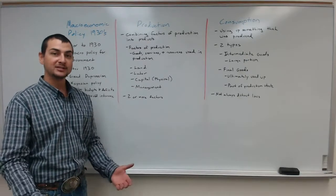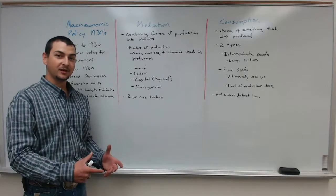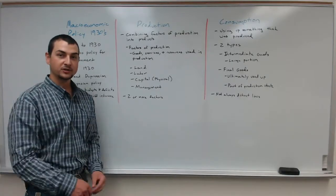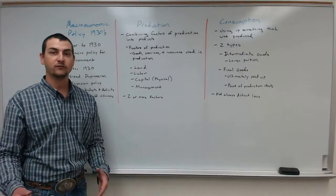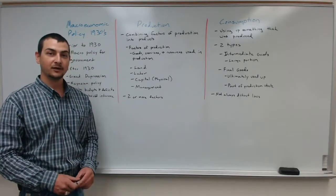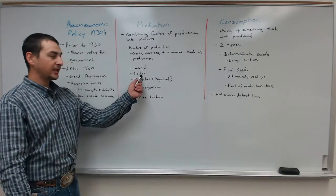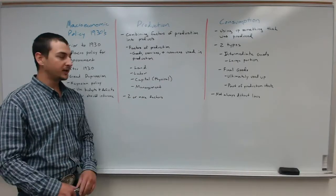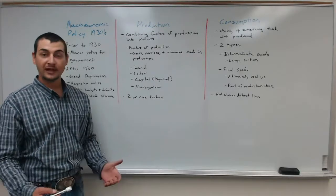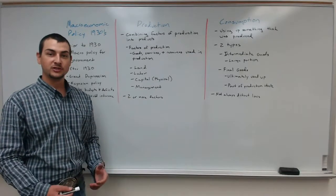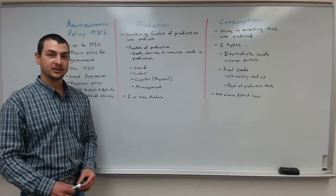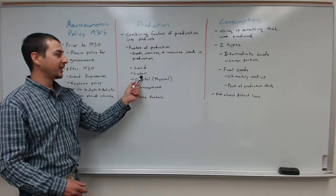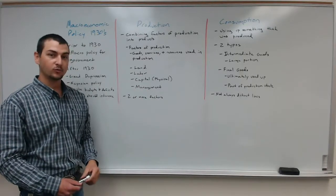Something as simple as a real estate agent who operates solely online — no physical office, setting up appointments online, visiting properties — even then, you still need labor and management, as well as physical capital, like the car used to get from point A to point B to show houses. So whenever we talk about production, we need land, labor, capital, management, or a combination of these, and we need at least two or more of these factors.